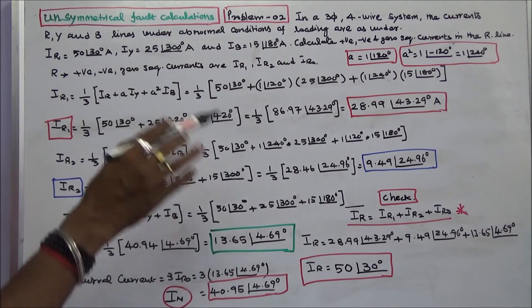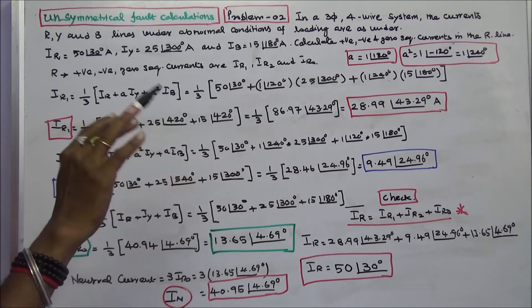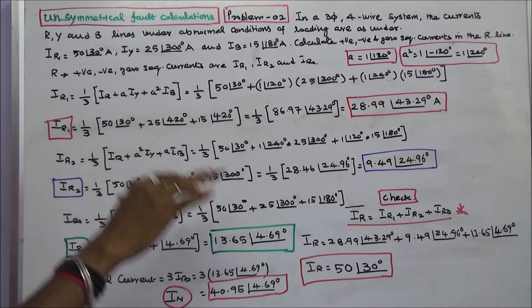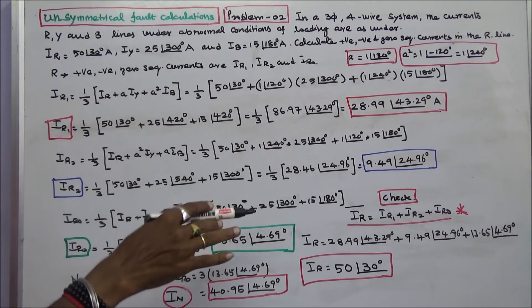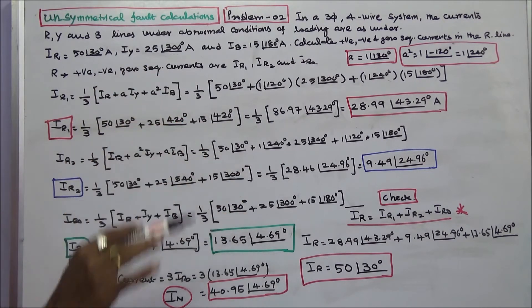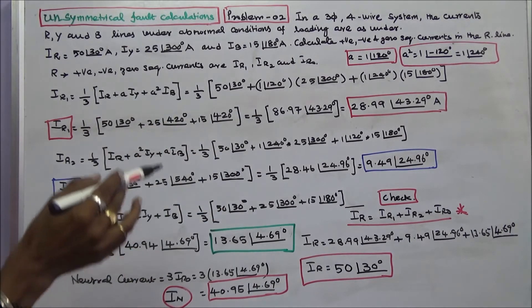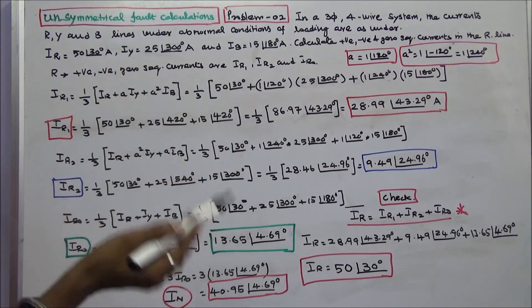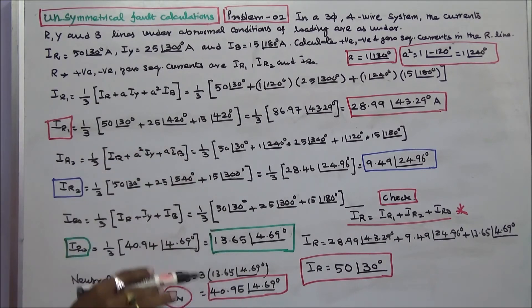In a balanced system, the zero sequence current and the negative sequence current are zero; only positive sequence current exists. If the system is unbalanced, the zero sequence and negative sequence currents will exist, so the neutral current is not equal to zero. The neutral current is IR plus IY plus IB, or 3 times the zero sequence current. With this I conclude my lecture. Thanks for listening.